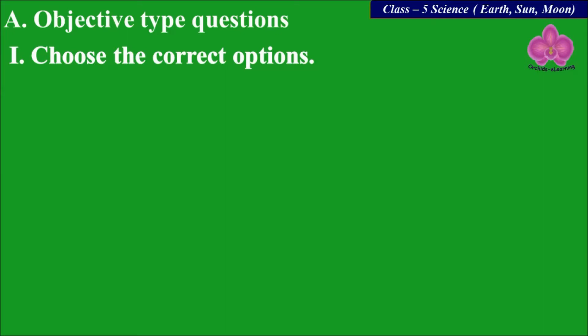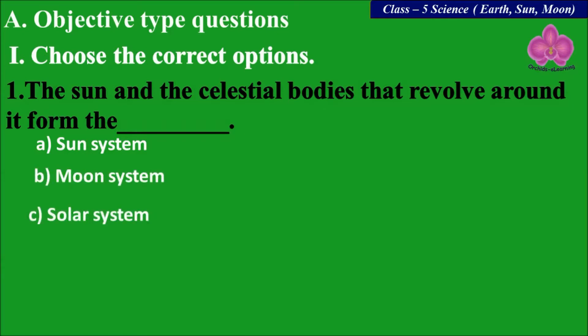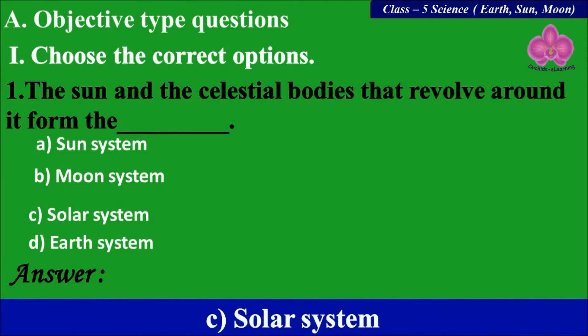First question, choose the correct options. Number one: the Sun and the celestial bodies that revolve around it form the dash. Option A: Sun system, B: Moon system, C: Solar system, D: Earth system. Think about your answer — the answer is C, Solar system.